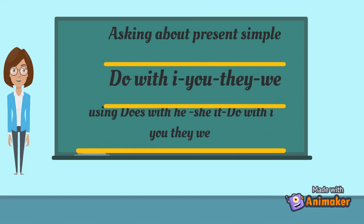To ask about the present simple, use 'does' with he, she, it — and add the base verb without S. Use 'do' with I, you, they, we — plural.